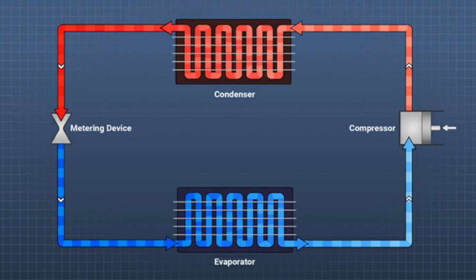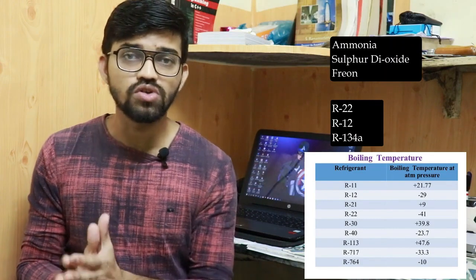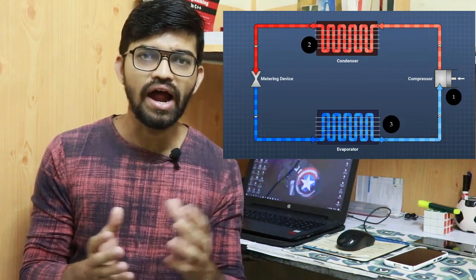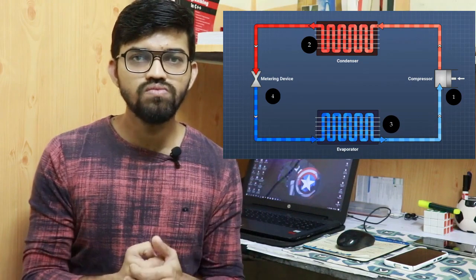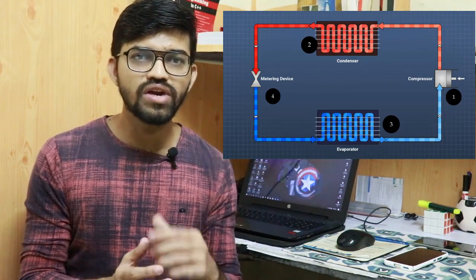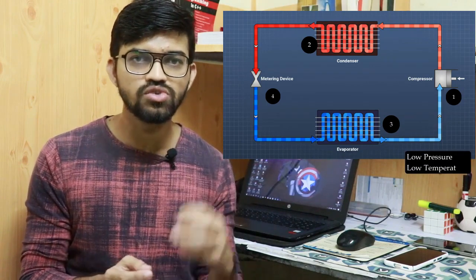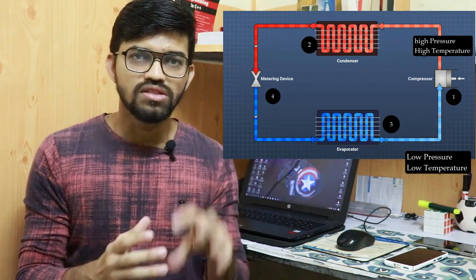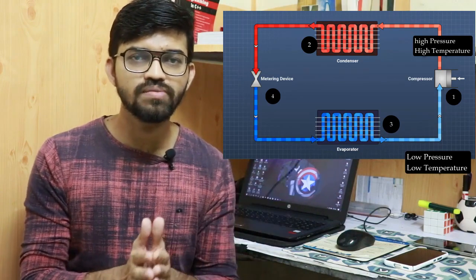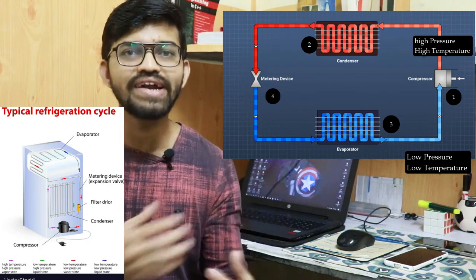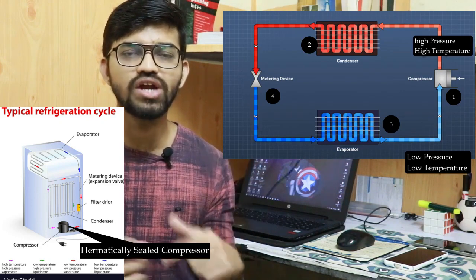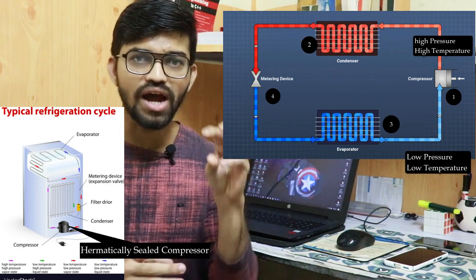The vapor compression refrigeration system consists of four main parts: the compressor, condenser, evaporator, and expansion valve. First, the liquid refrigerant at low pressure and low temperature enters the compressor. The compressor compresses that refrigerant to high pressure and high temperature. In a domestic refrigerator, we can see the hermetically sealed compressor — the black one — which compresses the refrigerant to higher pressure and higher temperature.